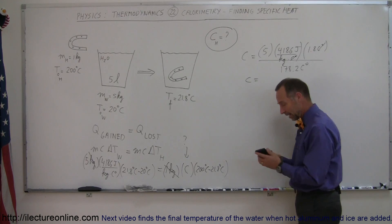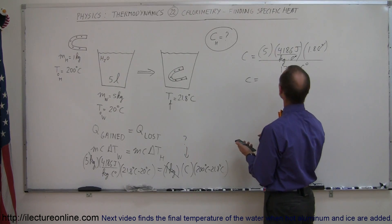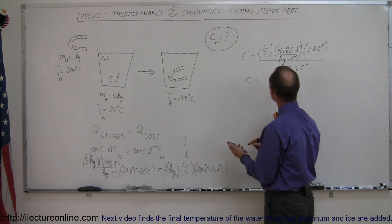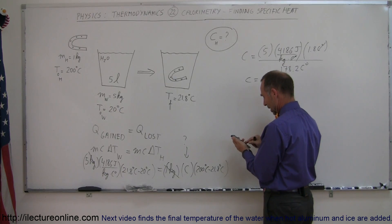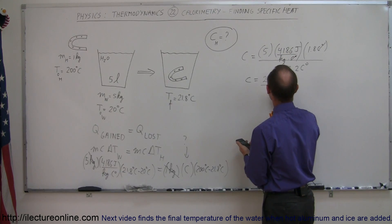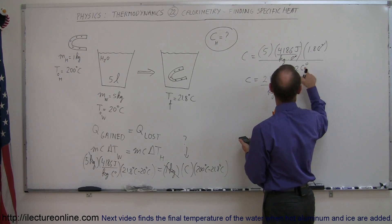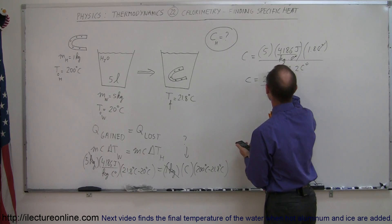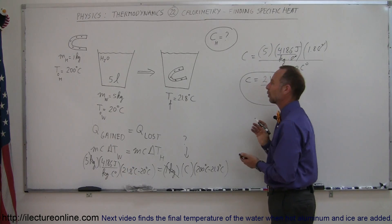Now with my calculator, I can go ahead and figure out what that is equal to. So we have 5 times 4186 times 1.8 divided by 178.2 equals, and the answer is 211 joules per kilogram per centigrade degree. And that would then be the specific heat of the horseshoe.